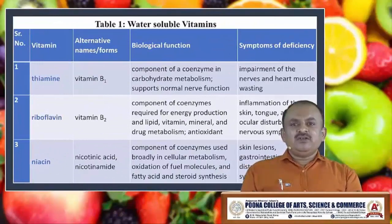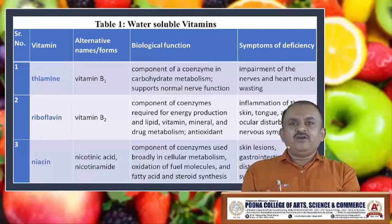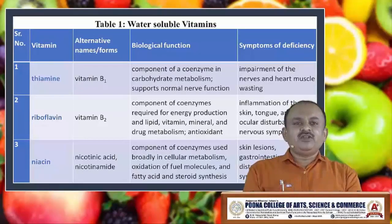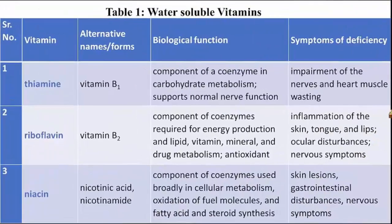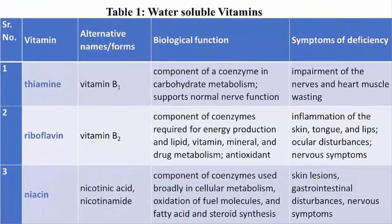Choline helps in normal functioning of the brain and nervous system; lack of choline can cause swelling in the liver. Carnitine helps the body change fatty acids into energy. It is very important to know the alternative names of vitamins and their biological functions.